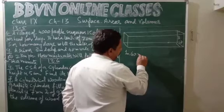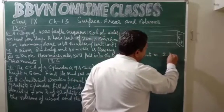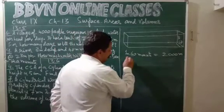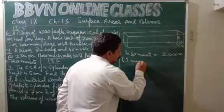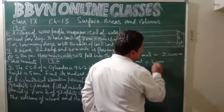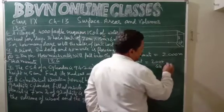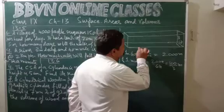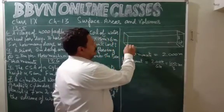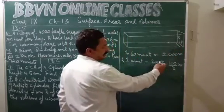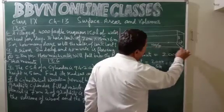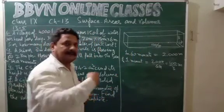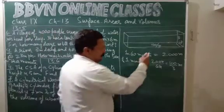In 60 minutes it covers a distance of 2 kilometers, and 2 kilometers is 2000 meters. Now in 1 minute it will be 2000 upon 60; zero cancels, so it is 100 upon 3 meters. This will be the length of the water column. Suppose a water molecule starts from here — in 1 minute it will reach a distance of 100 upon 3 meters. So this entire cuboidal structure and whatever water it contains will be the volume of water that falls into the sea in 1 minute. So this becomes the length.